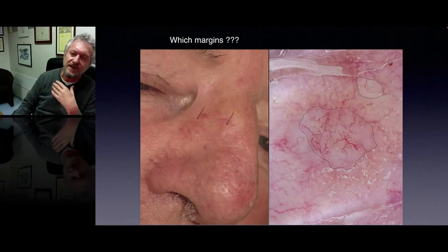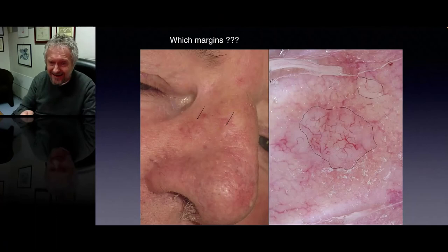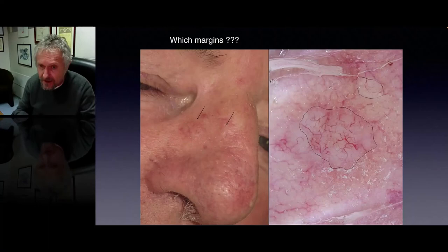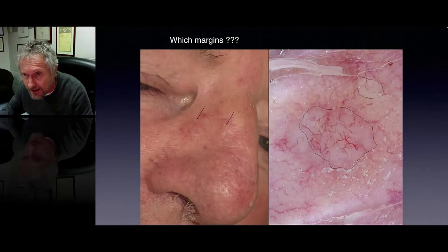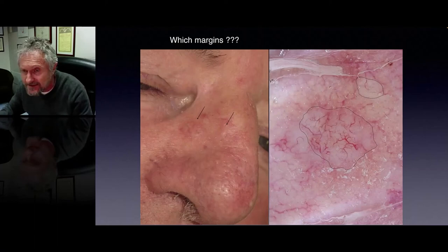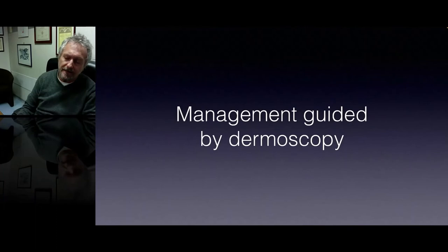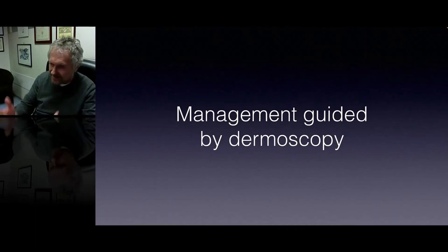There is also another application of dermoscopy which I find extremely useful before surgery. Very often, clinically, it's not so easy to identify the borders of the lesion before surgery. If we use dermoscopy, we are able to identify much more clearly the borders of the lesion. In this particular case, we identified that there is a small island — a kind of satellite BCC. Therefore, we are much more able to perform a complete surgery with a complete excision of the tumor.